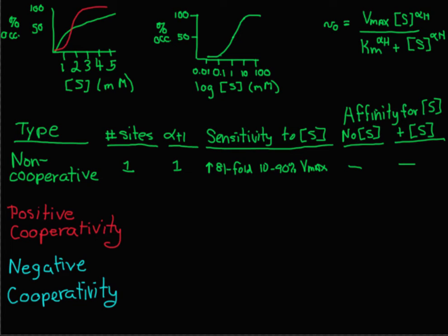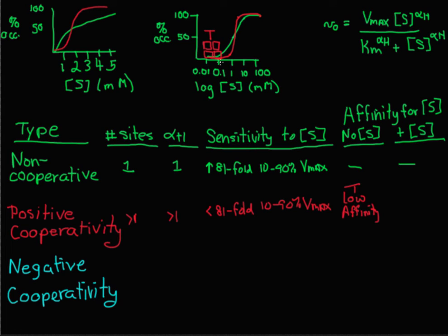In positive cooperativity, you have that S-shaped curve and increased sensitivity, which we can see on the log plot. The Hill slope is greater than 1, and there's more than one catalytic site. It takes less than an 81-fold increase in substrate to go from 10% to 90% of Vmax. The way you get this increased sensitivity is by a change in affinity — in the absence of substrate, the enzyme starts out in the low affinity, or T, conformation. With low substrate it's in the T conformation, and with high substrate it switches to the R conformation, the high affinity state.